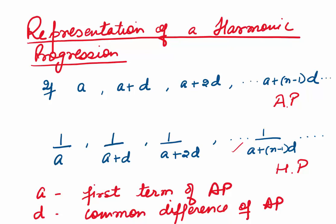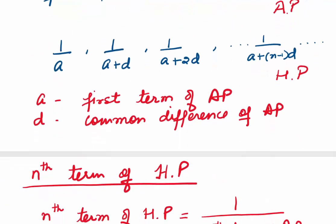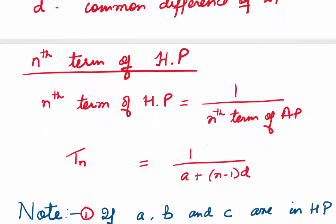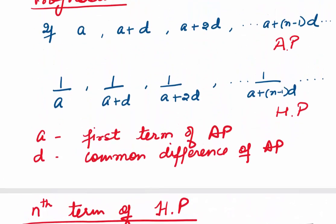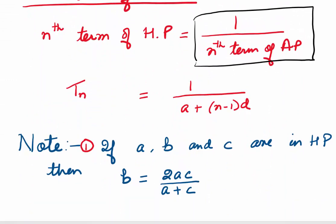Here, remember a is the first term of the AP and d is the common difference of the AP. The nth term of an HP is very easy to find — we just take the reciprocal of the nth term of the AP. So the nth term Tn of an HP is 1/(a+(n-1)d).